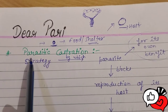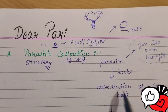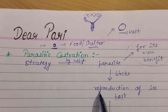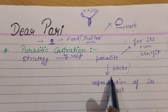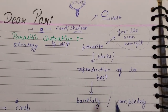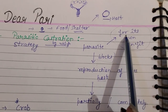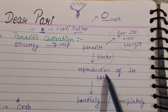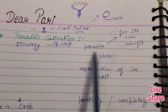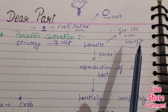Parasitic castration is a strategy in which a parasite blocks the reproduction of the host. If it blocks the reproductive tract, the energy or nutrients that would have gone to reproductive organs can instead be used to benefit the parasite.